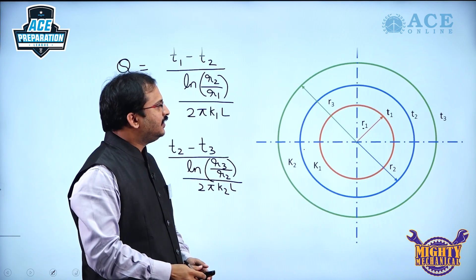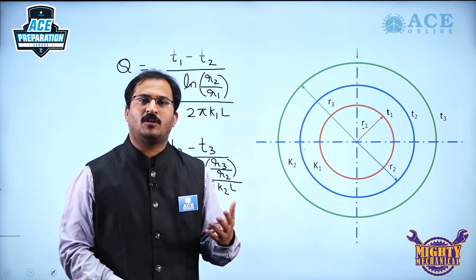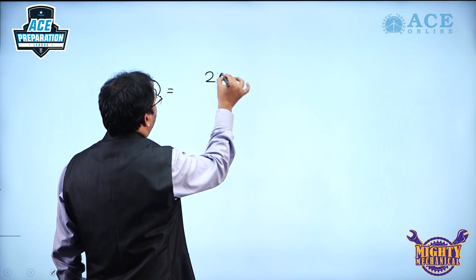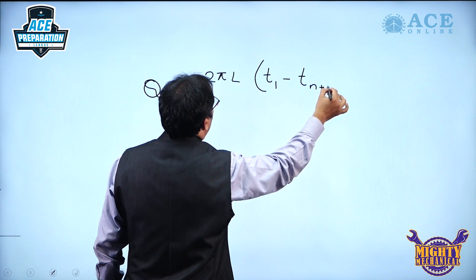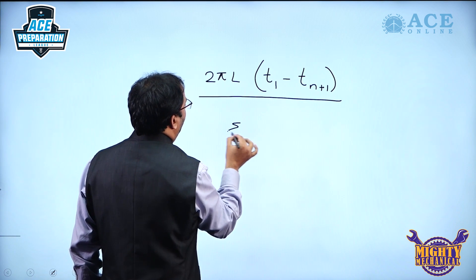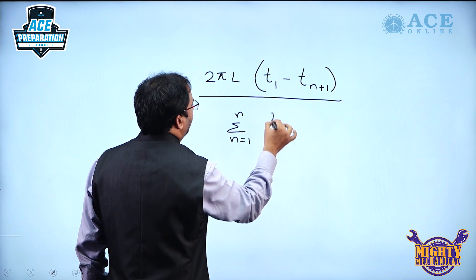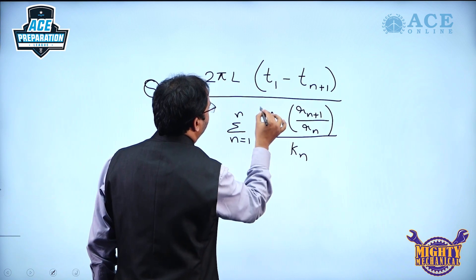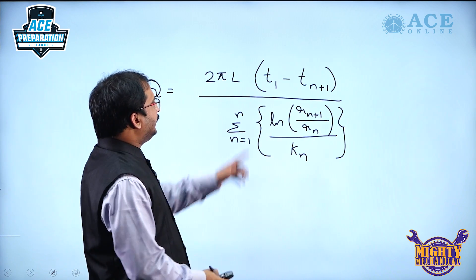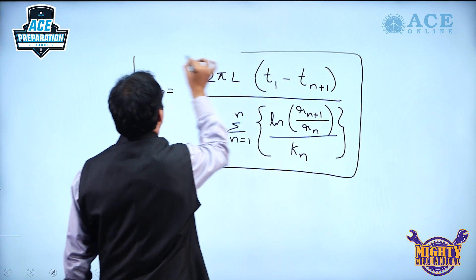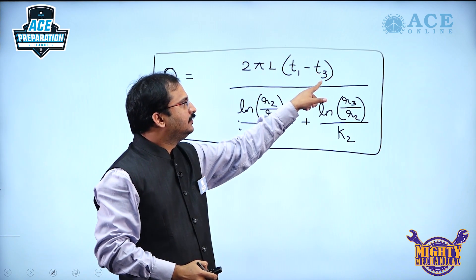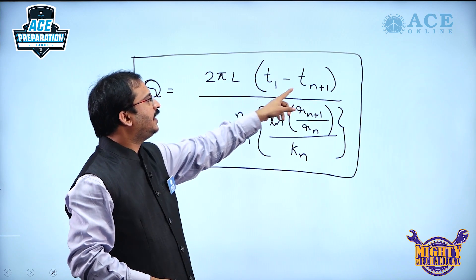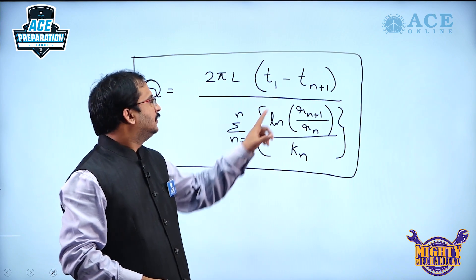Suppose if there are n cylinders, what could be the overall heat transfer? For that the expression goes like this: Q is equal to 2πL into T1 minus Tn+1 divided by sigma n equals 1 to n of ln(Rn+1/Rn)/Kn. T1 minus Tn+1 we have written here because when there are 2 cylinders we are getting the exit temperature as T3. Therefore, when there are n cylinders, the outermost layer temperature will be Tn+1, that is the reason we have written.